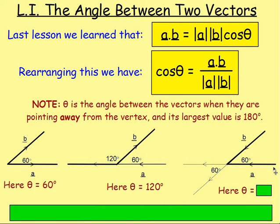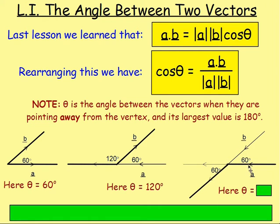For this one here, once again you have two vectors. Again they need to be pointing away from the vertex — both vectors were pointing in to the vertex. So you need to rearrange them. If you slide this vector down, same length, same direction, and slide the other over, same length, same direction, they are now both pointing away from the vertex. The angle is 60 degrees between them, so the size of θ is 60 degrees.